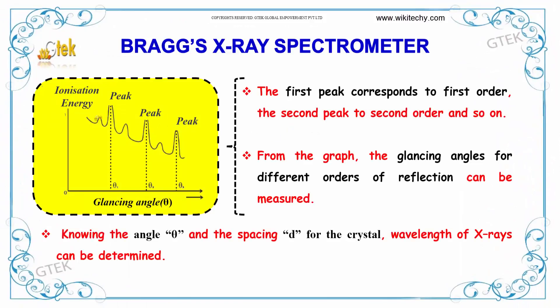The first peak corresponds to the first order of reflection, and the second peak corresponds to the second order. From the graph, the glancing angle theta for different orders of reflection can be measured. Knowing the angle theta and the spacing D for the crystal, the wavelength of X-rays can be calculated.